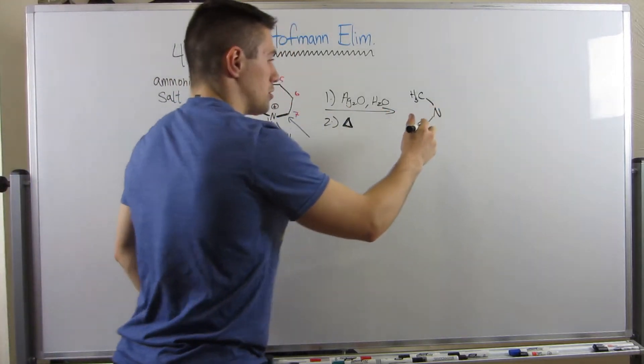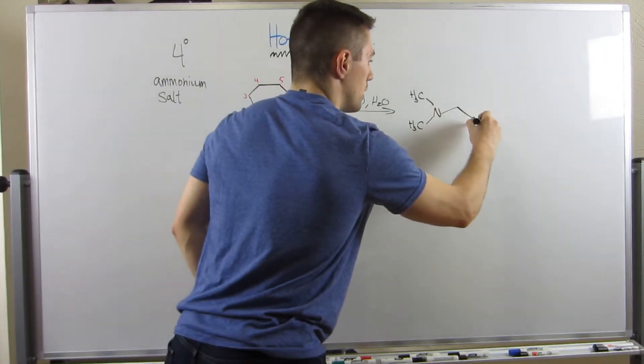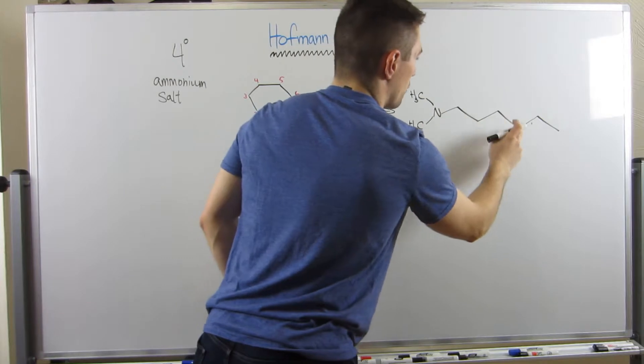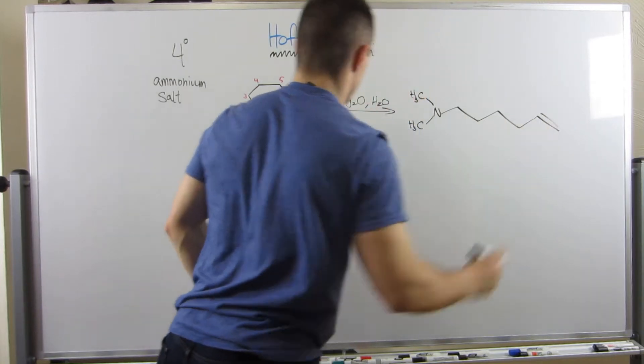So, 1 on the nitrogen, 2, 3, 4, 5, 6, 7. 1, 2, 3, 4, 5, 6, 7. Double bond between the 6 and 7.